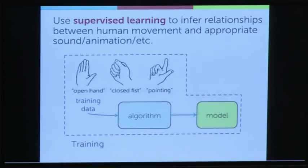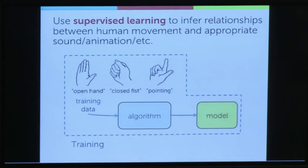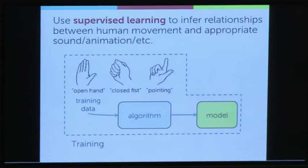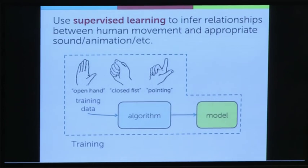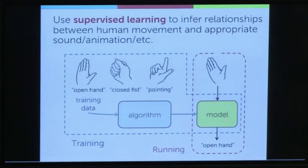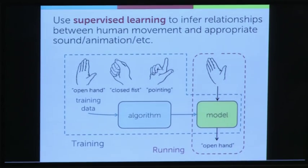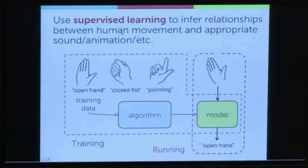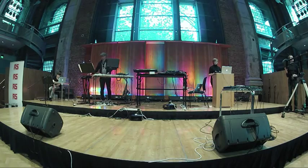If you haven't seen anything about supervised learning before, here it is in a nutshell. We start with some training data — if we're building a hand gesture controlled instrument, that might mean showing a few different hand gestures and giving them labels. Then we take an off-the-shelf machine learning algorithm that looks at those examples and builds a model of the relationship between, say, webcam pixels and some nice drum sounds. Once we've built this model, we run it in real time and have a performer make hand gestures, piping that information into Max, into Processing, whatever you want.